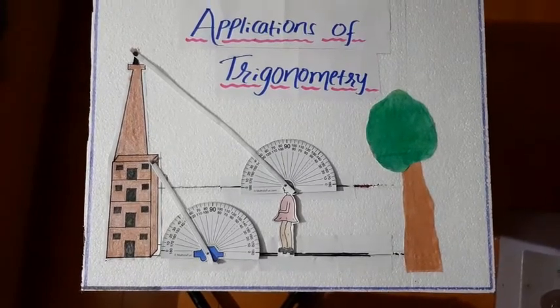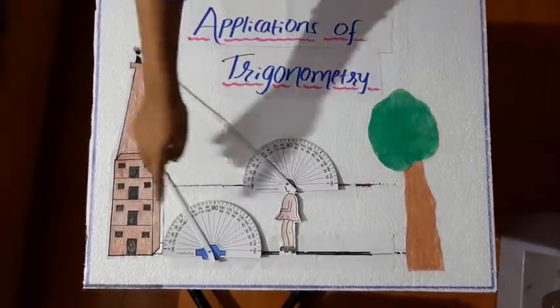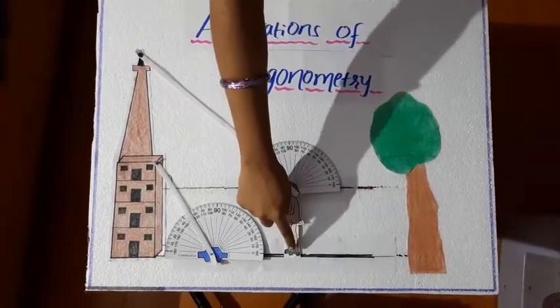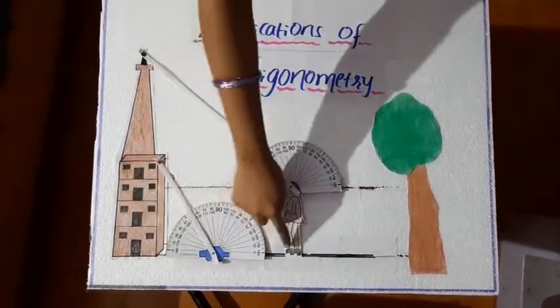And next is distance. Distance, it is a distance between the viewer and the object he is observing. Here, the distance means from here to here. This is the distance.